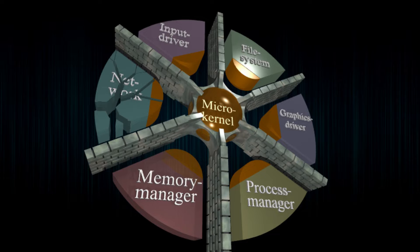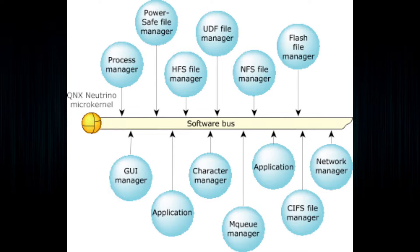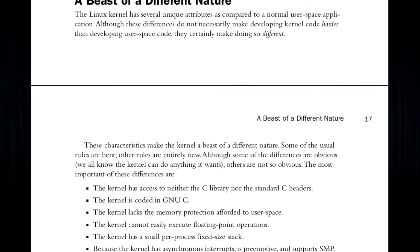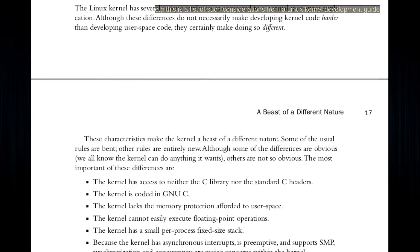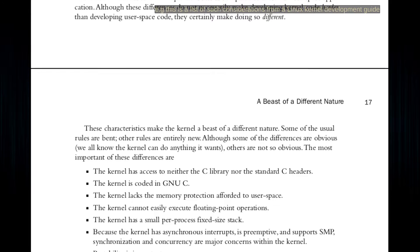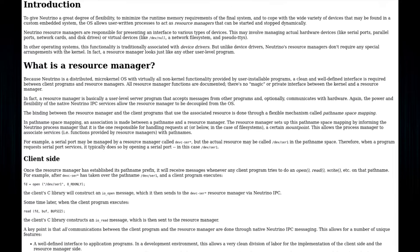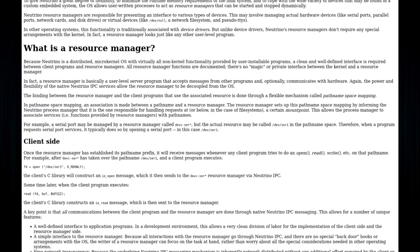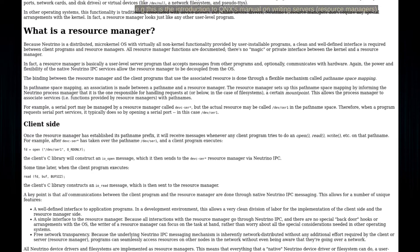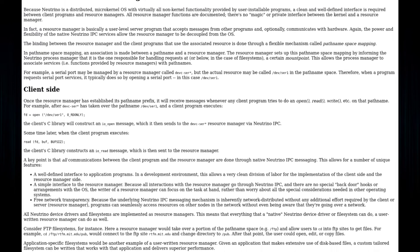Another major advantage of micro-kernel OSs is that they are easier to design for extensibility. Extending the functionality of typical monolithic kernels tends to be rather difficult, since there are many special considerations involved in writing kernel modules, as opposed to regular user programs. Extending a well-designed micro-kernel OS is normally just a matter of writing a normal user program that uses APIs to export and interface to other processes.